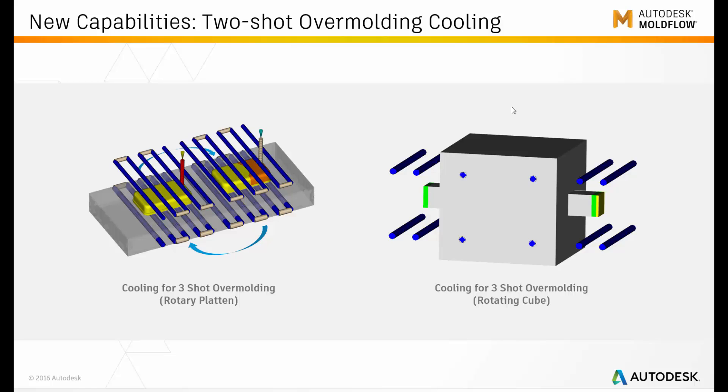We now allow you to run cooling analysis on two-shot overmolding. We covered two different scenarios in this case: one is the rotating platen scenario, and on the right side we have the rotating cube scenario.